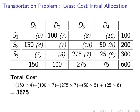So, it's 150 times 4, 100 times 7, 275 times 7, 50 times 5, and 25 times 8. Working that out, we get a total cost of 3,675.